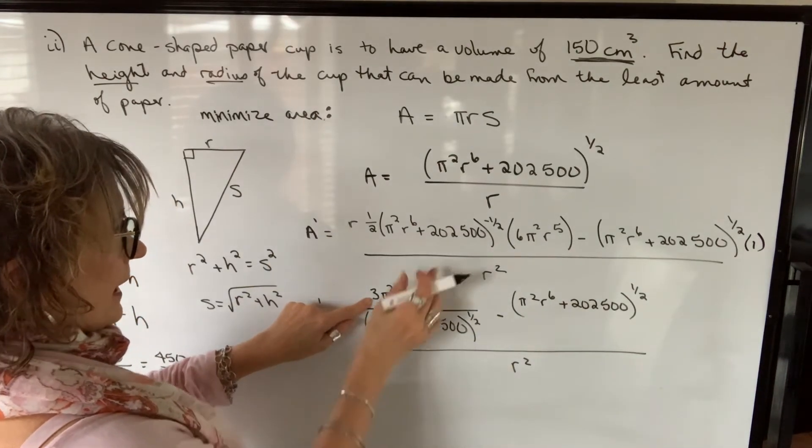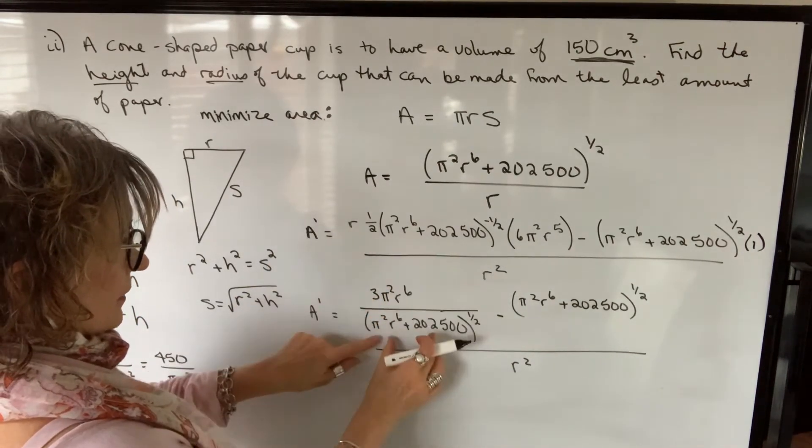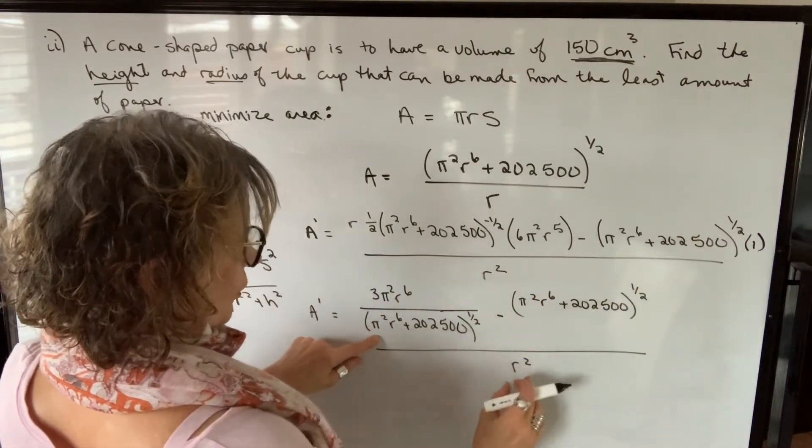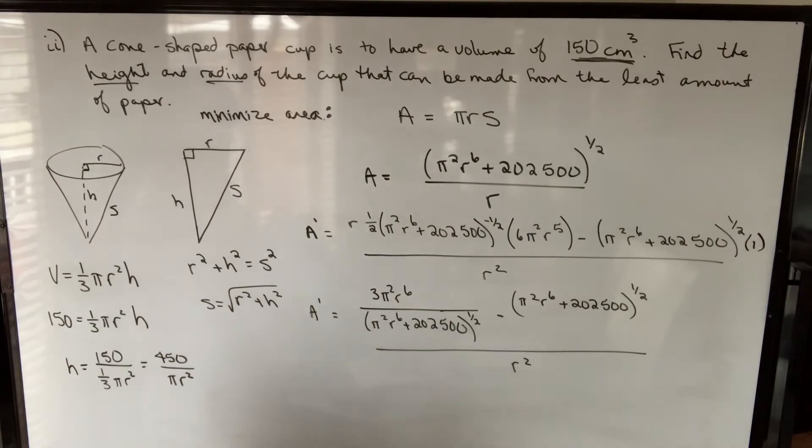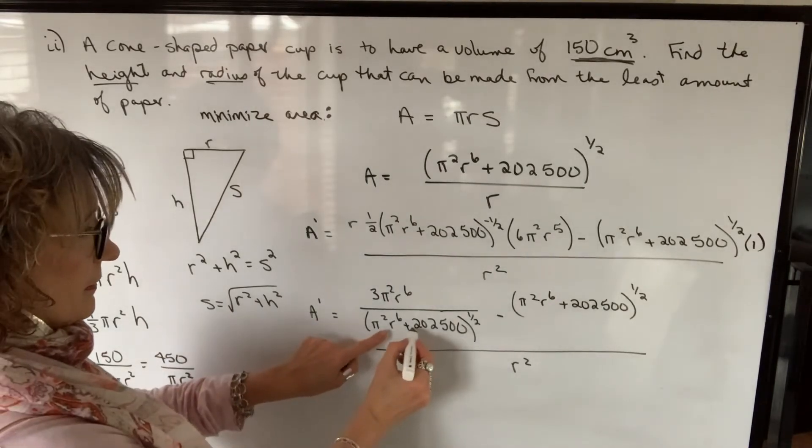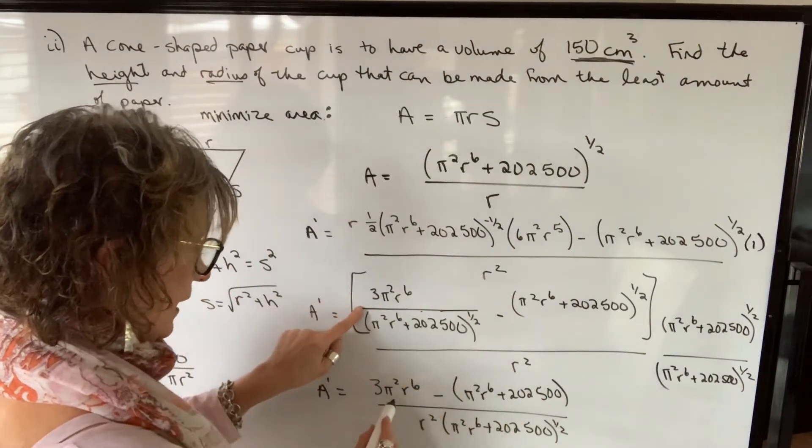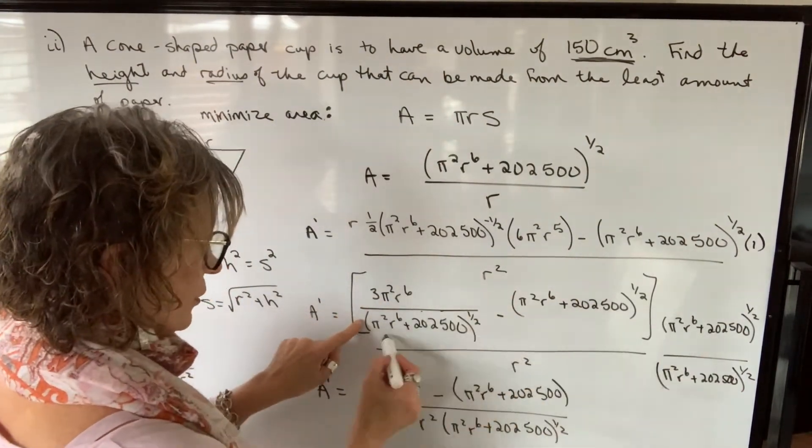And then I'm just going to move that into the denominator of that term minus this term over r squared. What I'm going to do is multiply numerator and denominator by this denominator. So I've multiplied this term by that, which makes that denominator cancel.